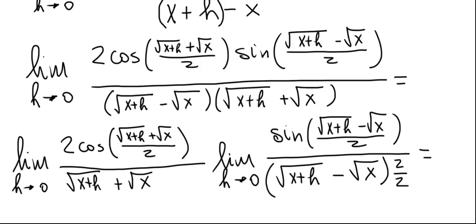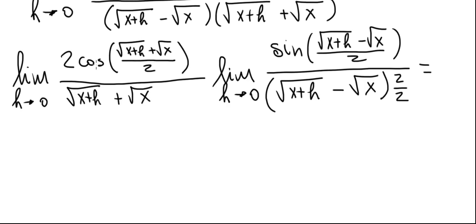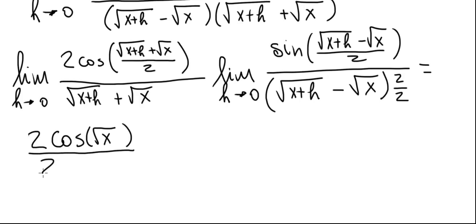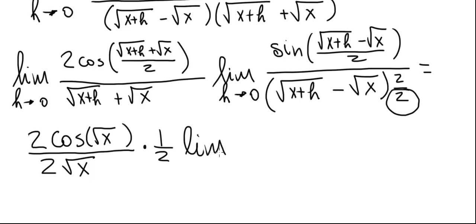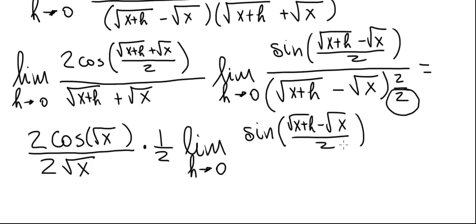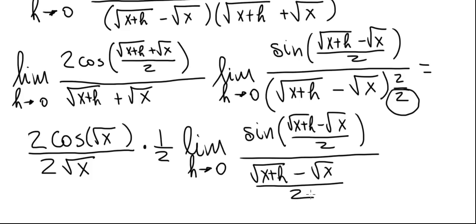Evaluating the first limit: as h goes to zero, inside the cosine we get 2√x/2 = √x, giving 2 cos(√x). The denominator contributes 2√x. The factor of 2 from numerator factors out as one-half, leaving the limit as h approaches zero of sine of (√(x+h) − √x)/2 divided by (√(x+h) − √x)/2.